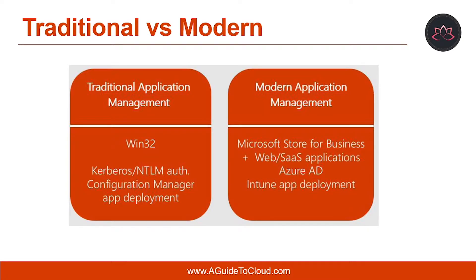You can use Mobile Application Management, or MAM, in Intune to manage and protect company data in Android and iOS apps that include support for MAM. For your company apps, you can enable MAM support by using either the Intune App Wrapping Tool or the Intune App SDK. The App Wrapping Tool is used primarily for internal line-of-business applications and does not support apps in the Apple App Store or Google Play Store.